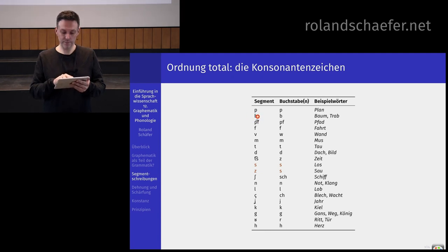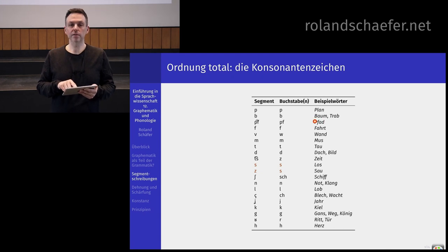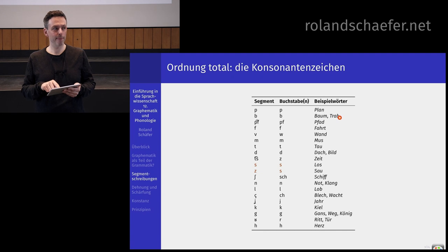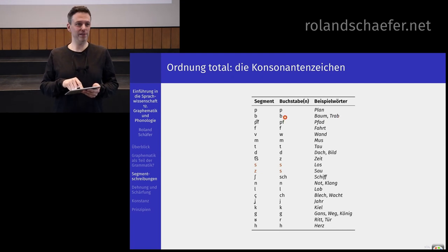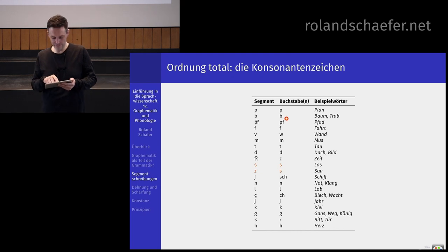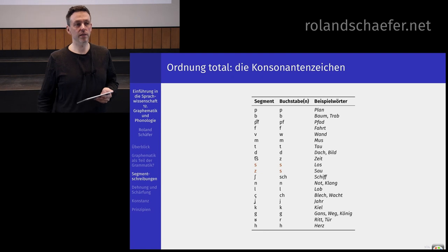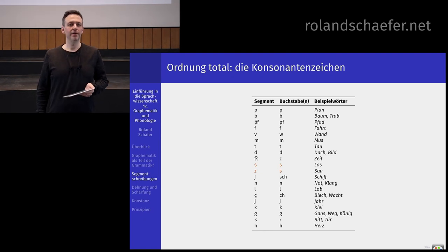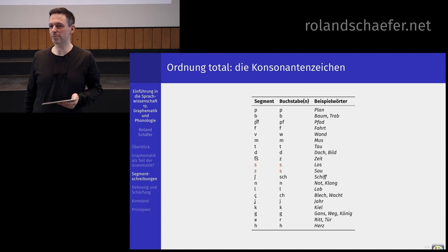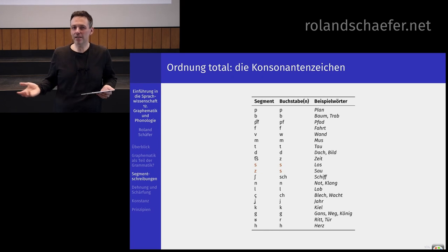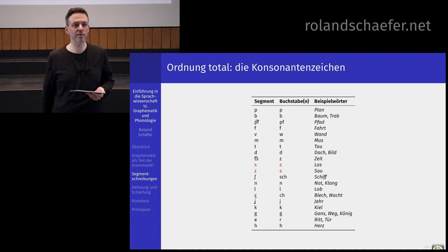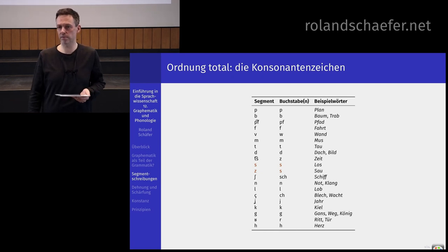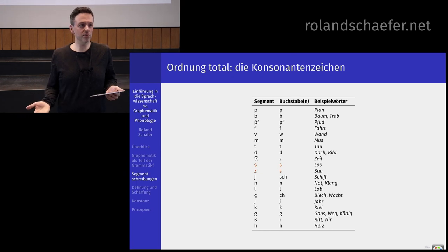Wenn Sie sich das zugrunde liegende B angucken, dann haben Sie das in Wörtern wie Baum und Trab. Das ist stimmhaft hier in Baum und stimmlos in Trab. Aber wir wissen ja: Endrand-Desonorisierung – zugrunde liegend ist das beides mal ein B. Wir schreiben auch in beiden Fällen ein B, da ändert sich nichts. So was wie Endrand-Desonorisierung bilden wir in der Schrift nicht ab. Oder auch G-Spirantisierung – bei wenig, weniger schreiben wir immer ein G, auch wenn wir 'wenich' sagen im Standard. Das sind immer die zugrunde liegenden Konsonanten, die wir schreiben.